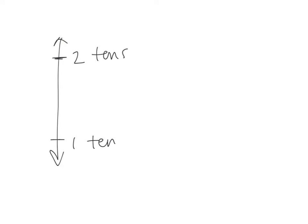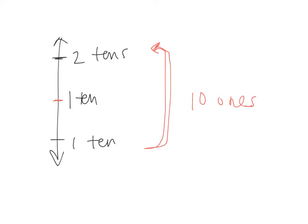If on my vertical number line I have one ten and two tens, what's the next digit — the next place value smaller than tens? Ones. And how many ones would it take to get from one ten to two tens? Ten ones. So what number would be right in the middle? Fifteen ones, or one ten and five ones. If I have one ten and six ones, is that closer to two tens or one ten? Closer to two tens. If I have one ten and three ones, is that closer to two tens or one ten? One ten. So any number with five or more ones is closer to two tens; less than five ones is closer to one ten. That's what rounding is all about — figuring out if it's closer to the upper or lower limit. That's why a vertical number line is really helpful.